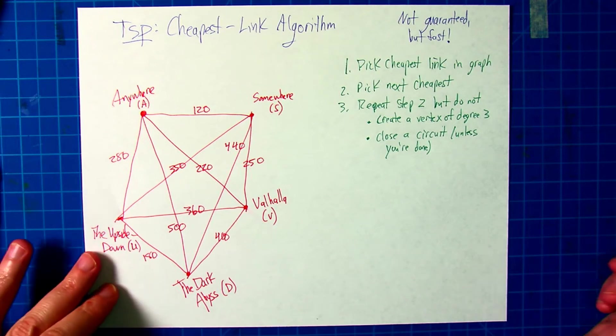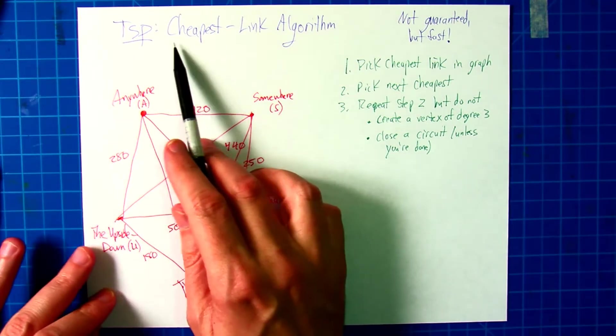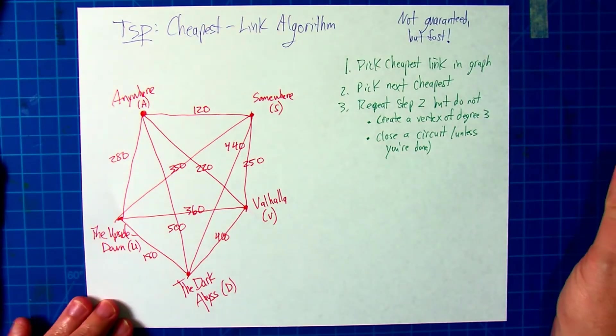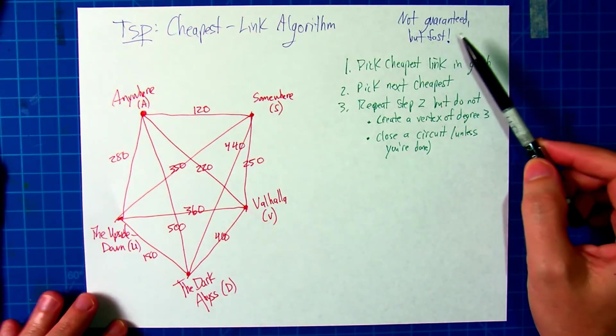Another way to attempt to solve the traveling salesperson problem is to use what's known as the cheapest link algorithm. Now, this is not guaranteed to find the absolute optimal solution, but it is pretty fast as well.